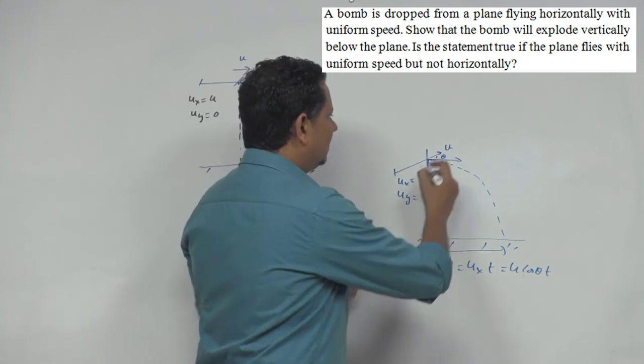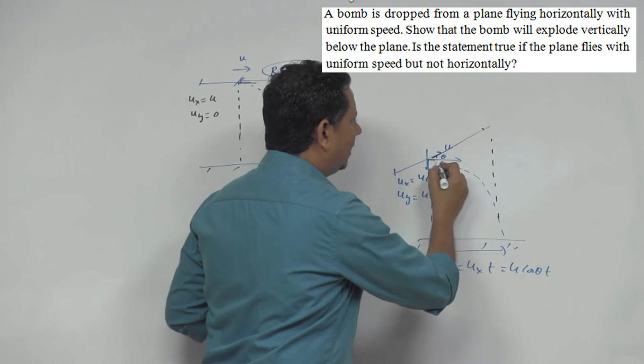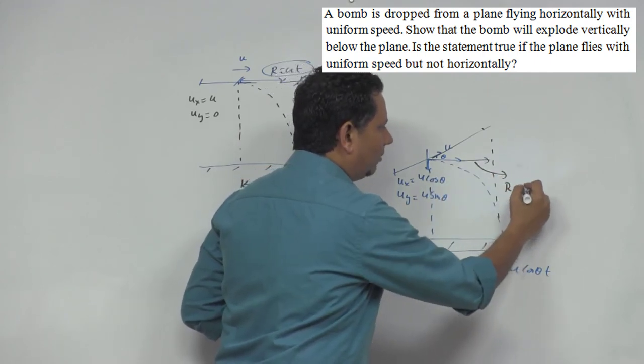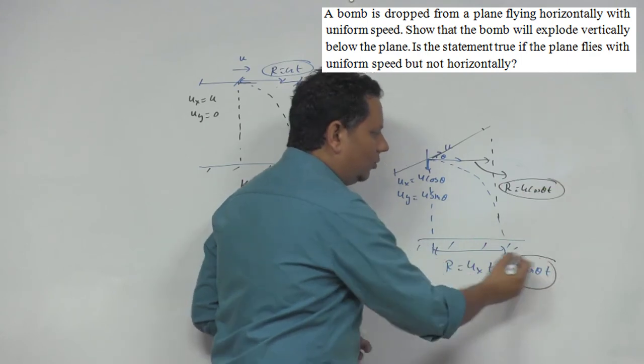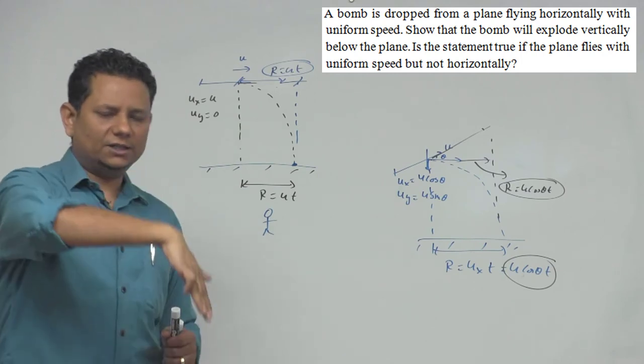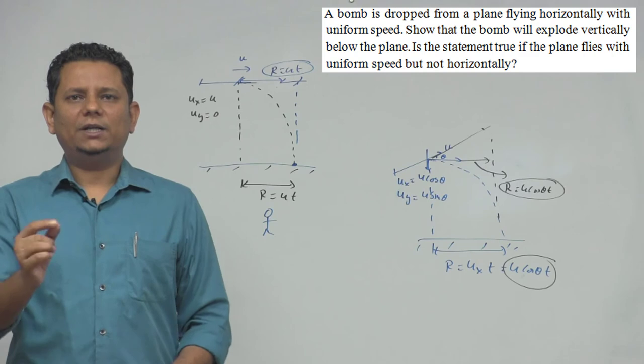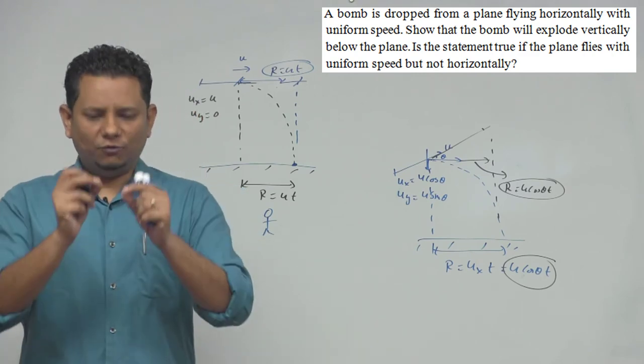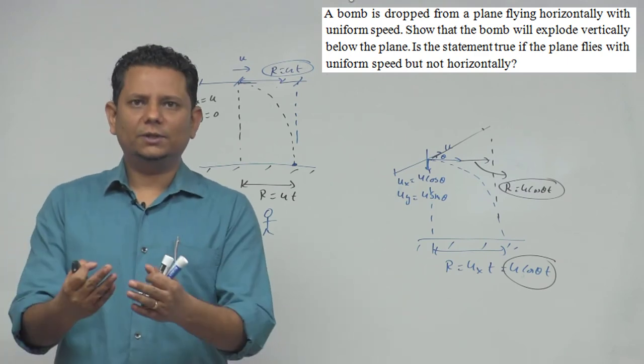The horizontal distance the plane travels from here to here, r will again be equal to u cos theta t. So this and this are both the same. Whether the plane flies horizontally or in some other direction like this, the horizontal distance of both at that time will be the same. And hence, the bomb will drop vertically right below. Air force pilots, if they drop a bomb, make sure to change its trajectory or maybe both so they can avoid those fumes.